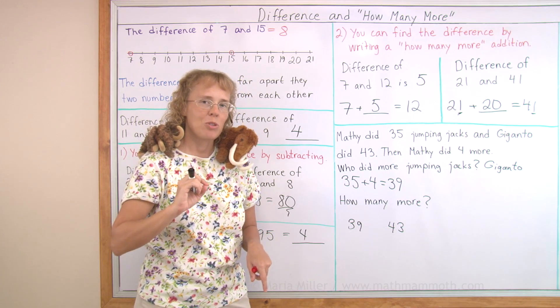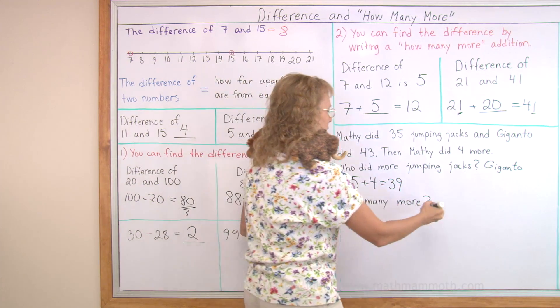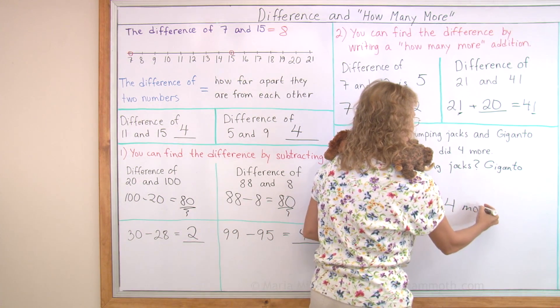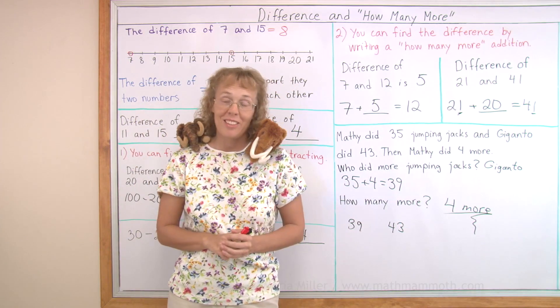39, you jump to 40, 41, 42, 43. Four steps apart, or four more, is the answer. Okay, we're all done with this lesson.